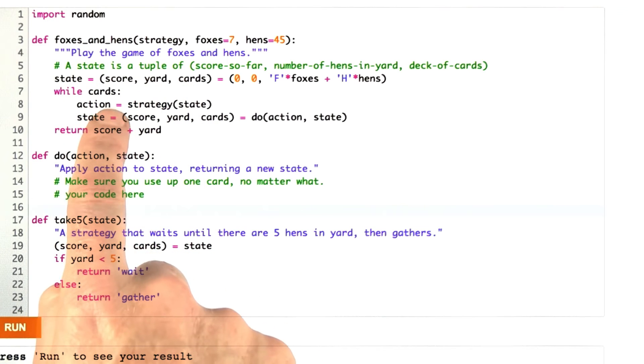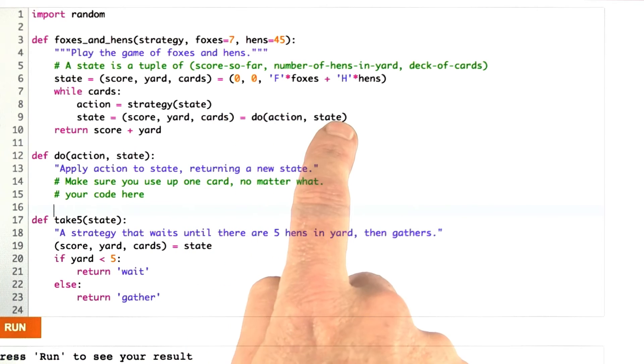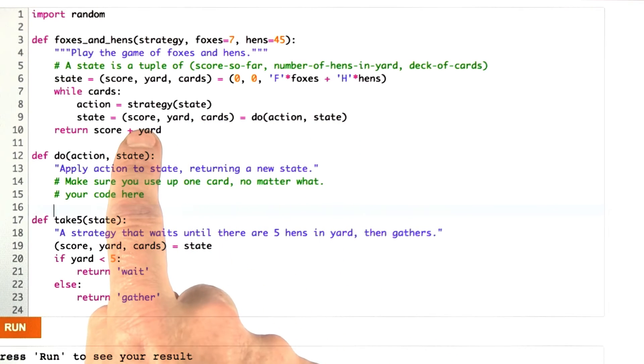And then we just go through the whole deck. We're going to be popping off a card from the deck each time, and we ask the strategy function for an action, and then we're going to define, and I'm going to ask you to define this do function, which does an action to a state and returns a new state, and that's going to be the score at the yard in the cards. And we keep going until the cards have gotten down to 0. So every time you do a do action, there's going to be one less cards in the state that gets returned, and at the end you get the score, and I don't think I mentioned this rule yet, but at the very end you automatically get to gather all of the chickens that are left in the yard if there are any remaining.